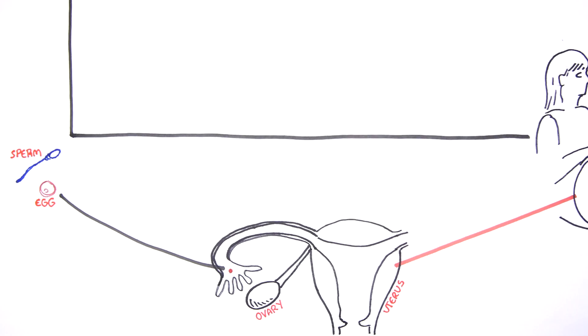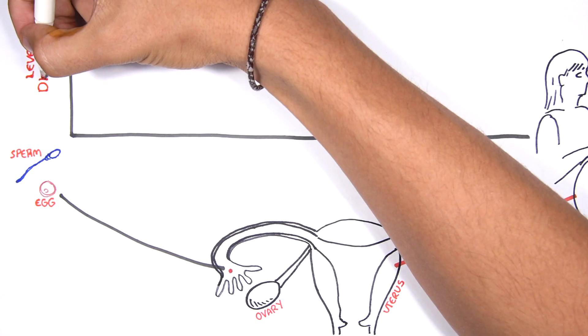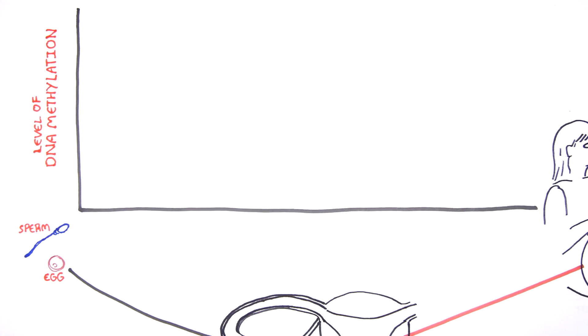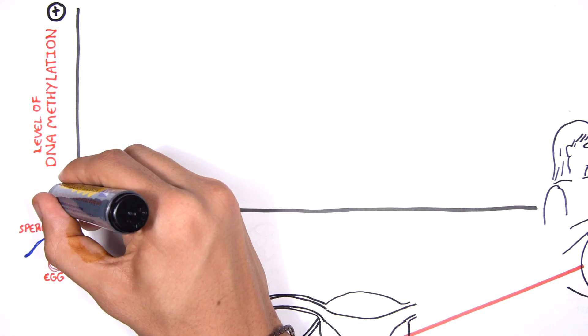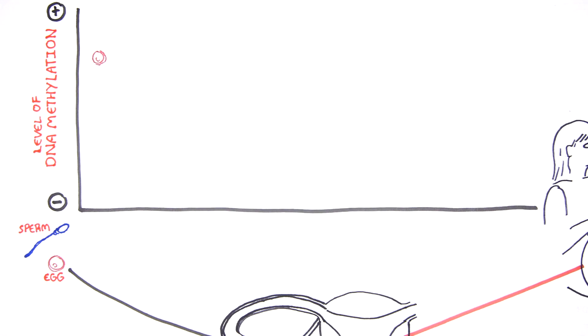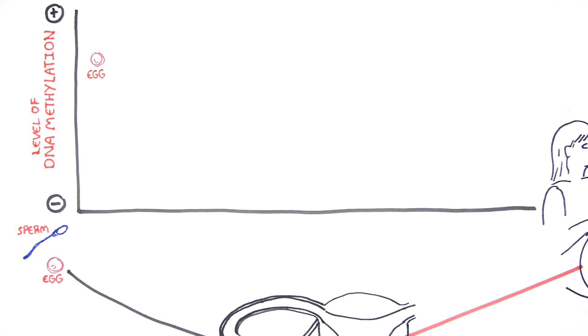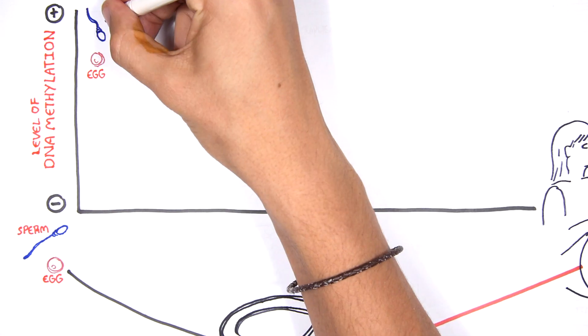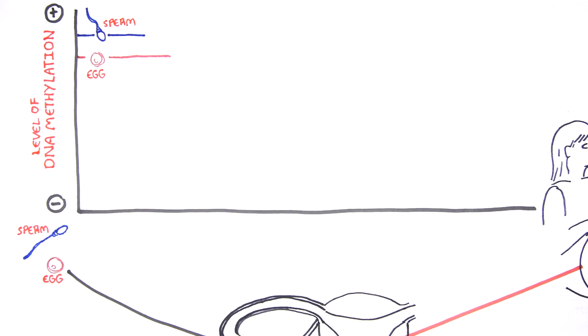It is important to draw a graph. Here we have on the y-axis the level of DNA methylation, and it can be increasing or decreasing during early embryonic development. The female egg and male sperm, as I already mentioned, carry their own DNA methylation patterns.